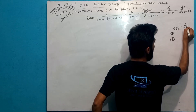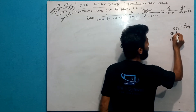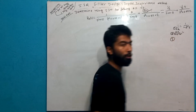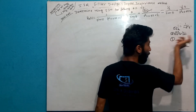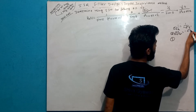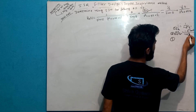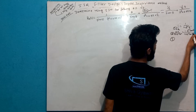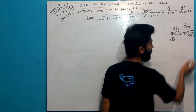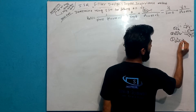For the first-order term: 1 by (1 minus e to the power minus pKT times Z inverse). Simple. For the second-order term, S plus A by (S plus A squared plus B squared): 1 minus e to the power minus aT cos(bT) times Z inverse, all over 1 minus 2e to the power minus aT cos(bT) Z inverse plus e to the power minus 2aT times Z to the minus 2.